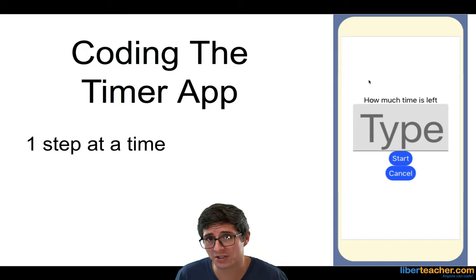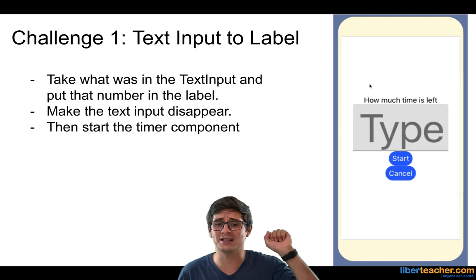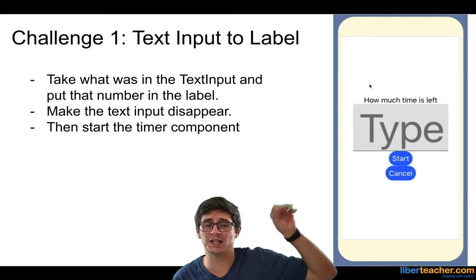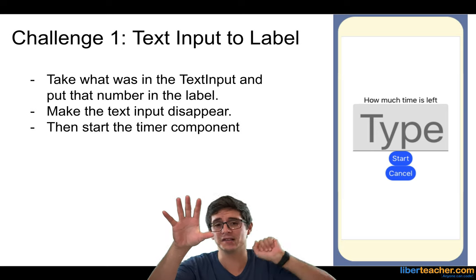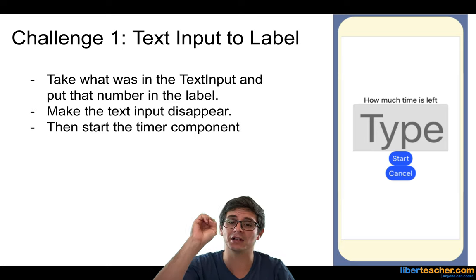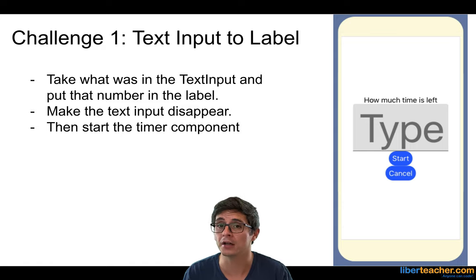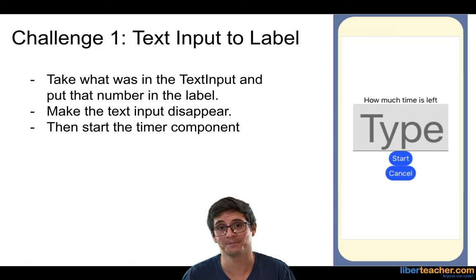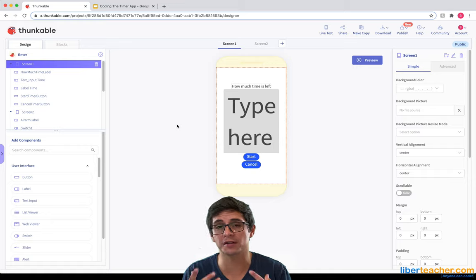The first thing we need to code is we need to change the text input — take what's in there, put it in the label, and then make the text input disappear and have the label show up. Then we want the timer component to start, and that'll be the next challenge to get the timer to count down. The number one thing we need to start thinking about is what's going to start this whole entire chain of events.